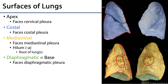The third surface is the diaphragmatic surface, also known as the base of the lung. The diaphragmatic surface faces the diaphragmatic pleura as well as the diaphragm. The most superior portion of the lung is known as the apex, and the apices of the lungs face the cervical pleurae up towards the roots of the neck.